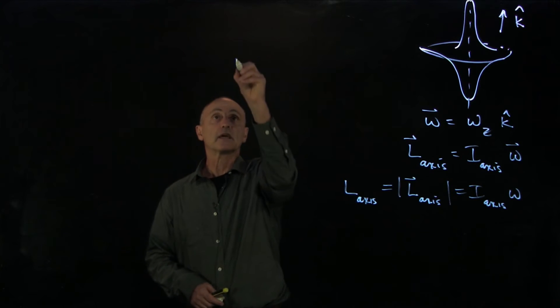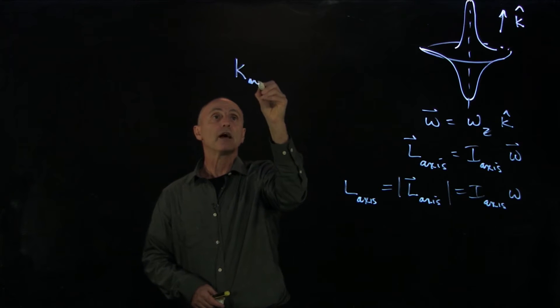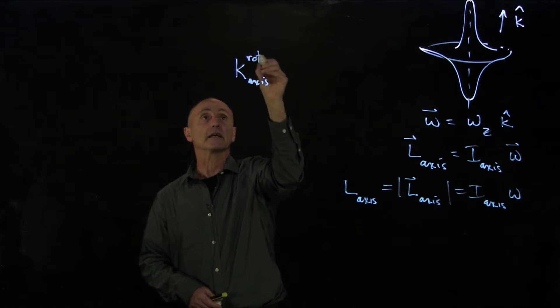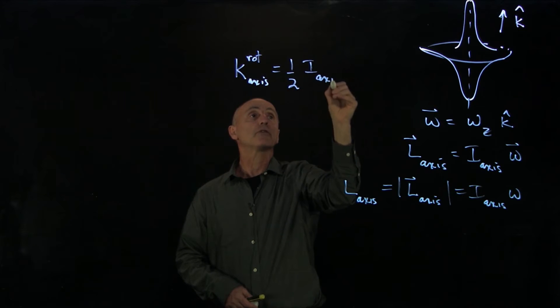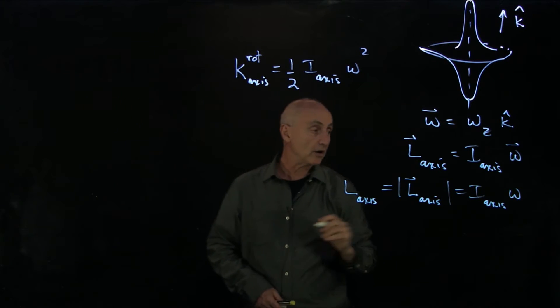Now, we've seen separately that the kinetic energy about this axis, which we'll call the rotational kinetic energy, was 1 half times the moment of inertia about that axis times the angular velocity squared.